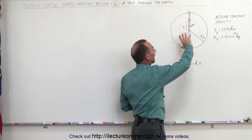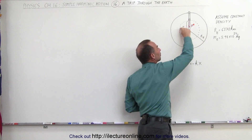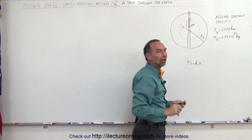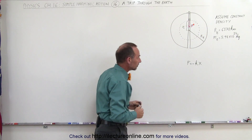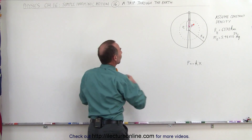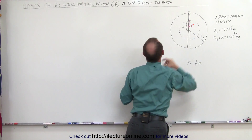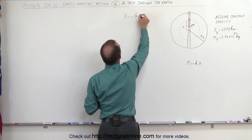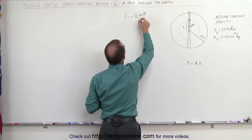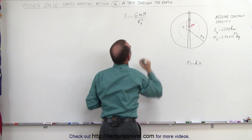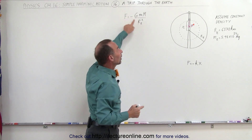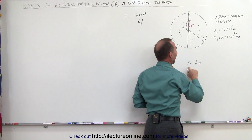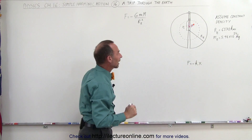At that moment, the force acting on the object would be the force of gravity from the remaining portion of the earth still inside the sphere defined by the radius of its current location. We'll first calculate the force at the very top: the force due to gravity equals minus G times the mass of the object times the mass of the earth divided by the radius of the earth squared. The minus sign is there because the force is negative when the position is positive, keeping it in the format of F equals minus kx.